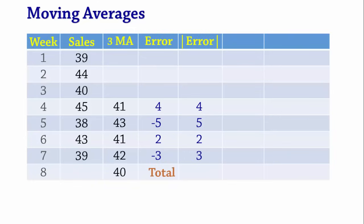First, we sum up the absolute errors and divide the total by 4 since there are only 4 errors. The total is 14 and the MAD is 14 divided by 4 which gives 3.5.